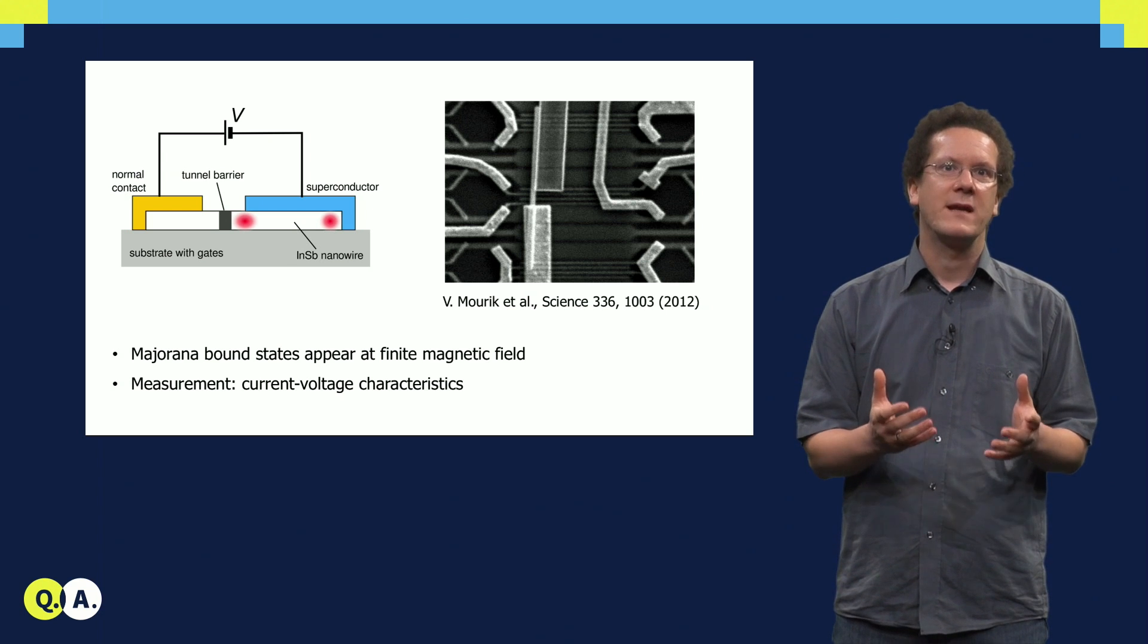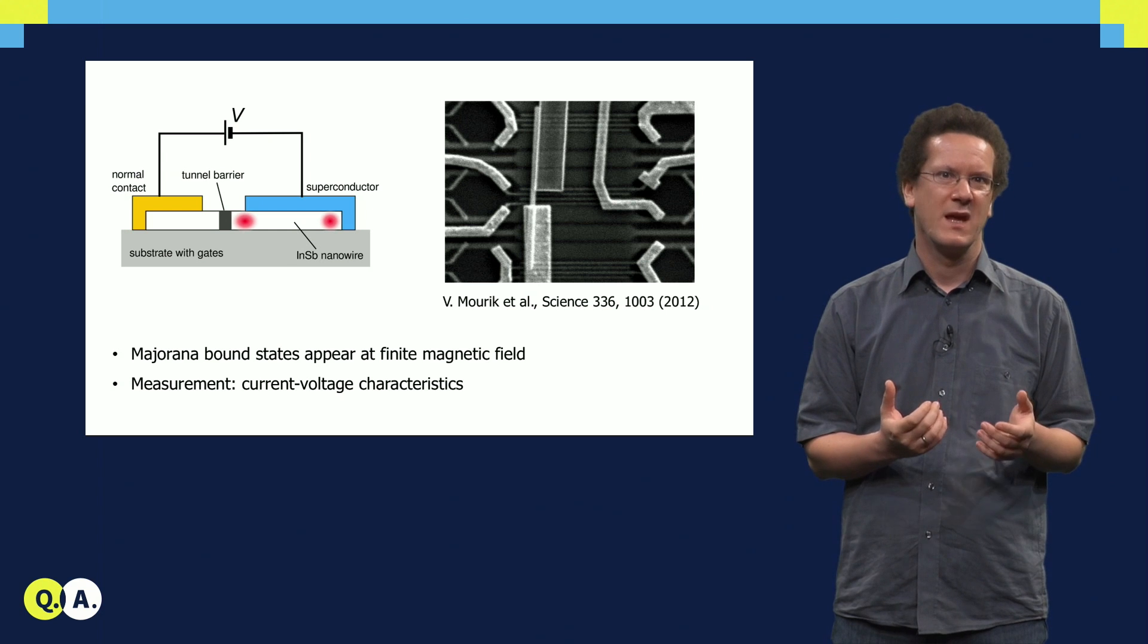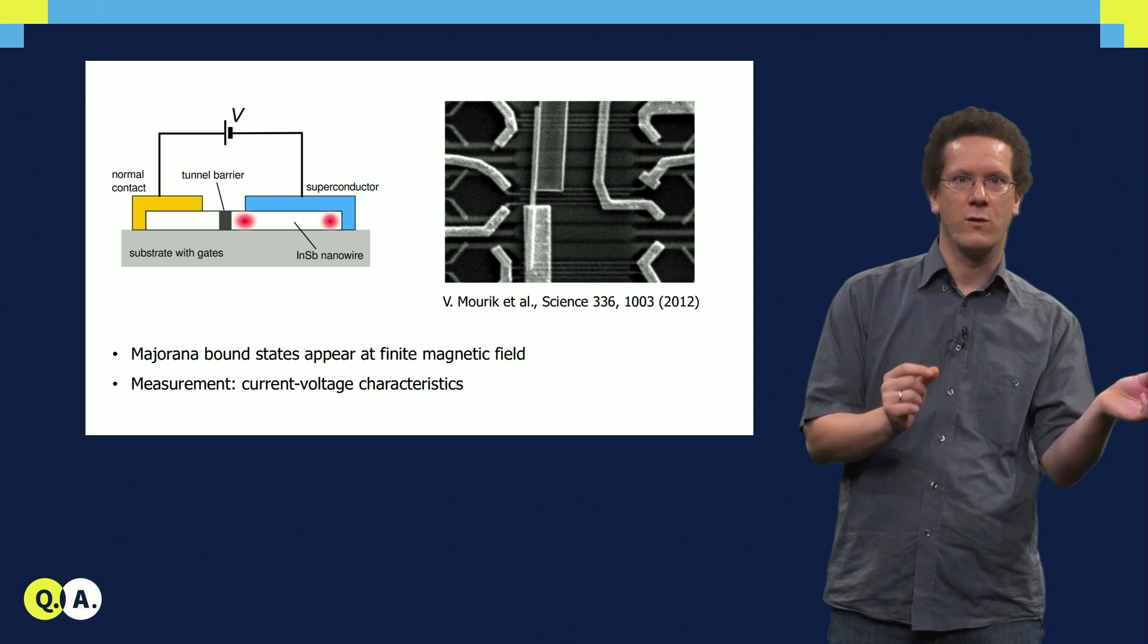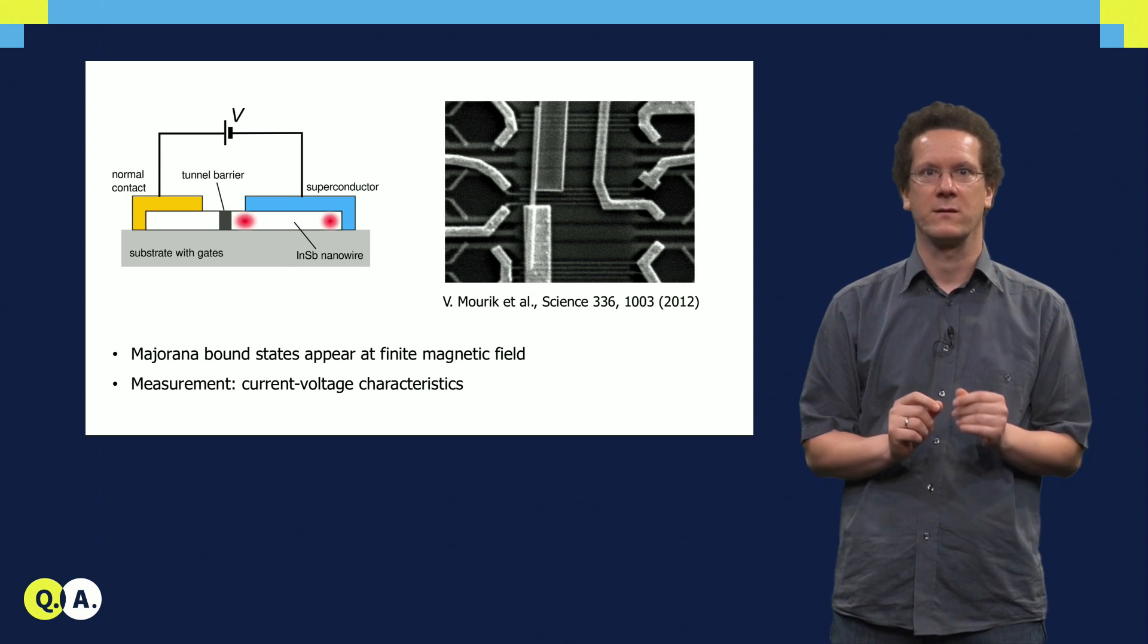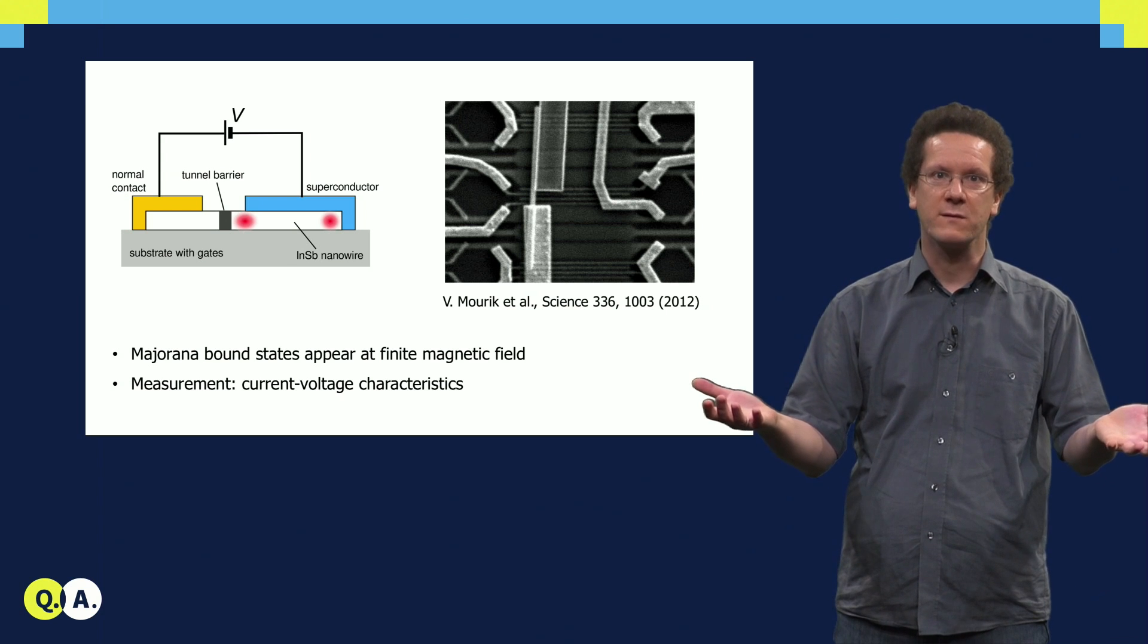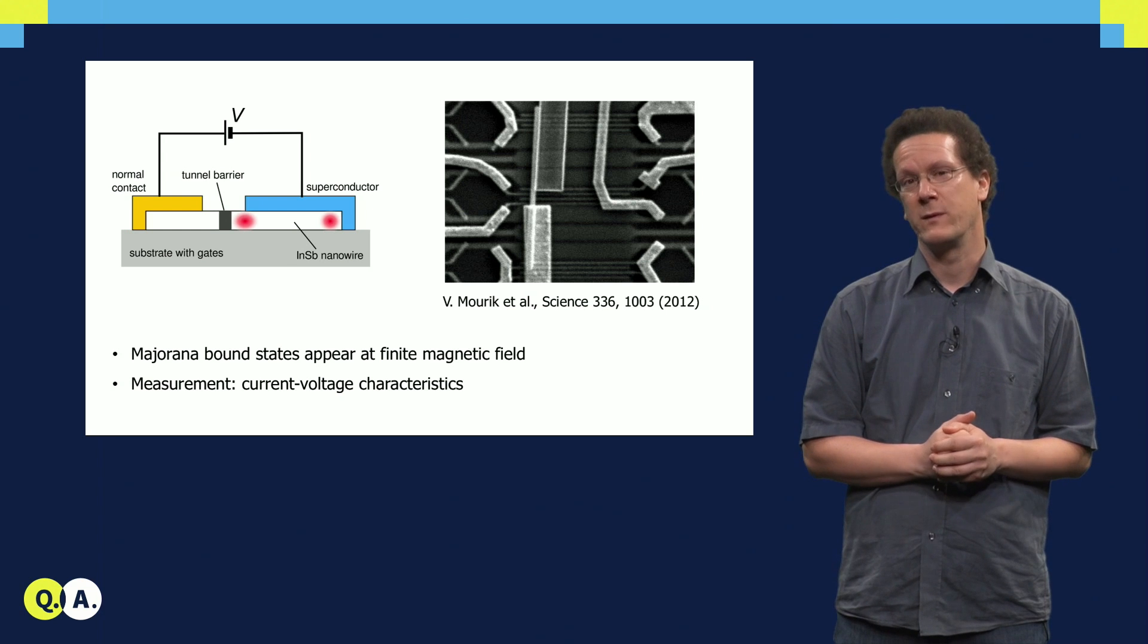Let us first understand how current flows in normal superconducting junctions in general. We have a normal metal in contact with a superconductor, and we want current to flow from the normal metal to the superconductor. This should be possible, as the superconductor has no resistance. However, the transport processes turn out to be a little bit more involved.